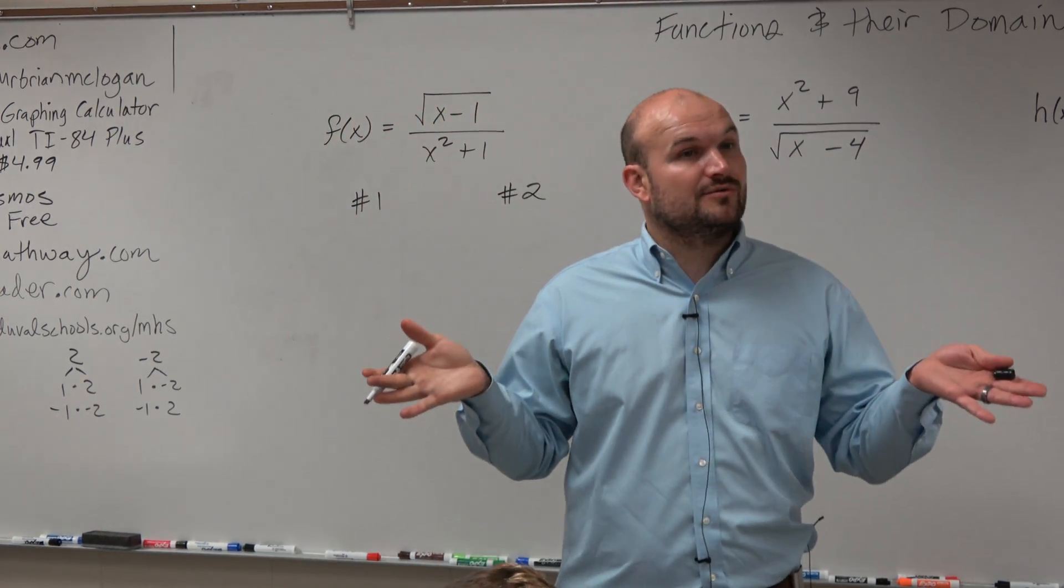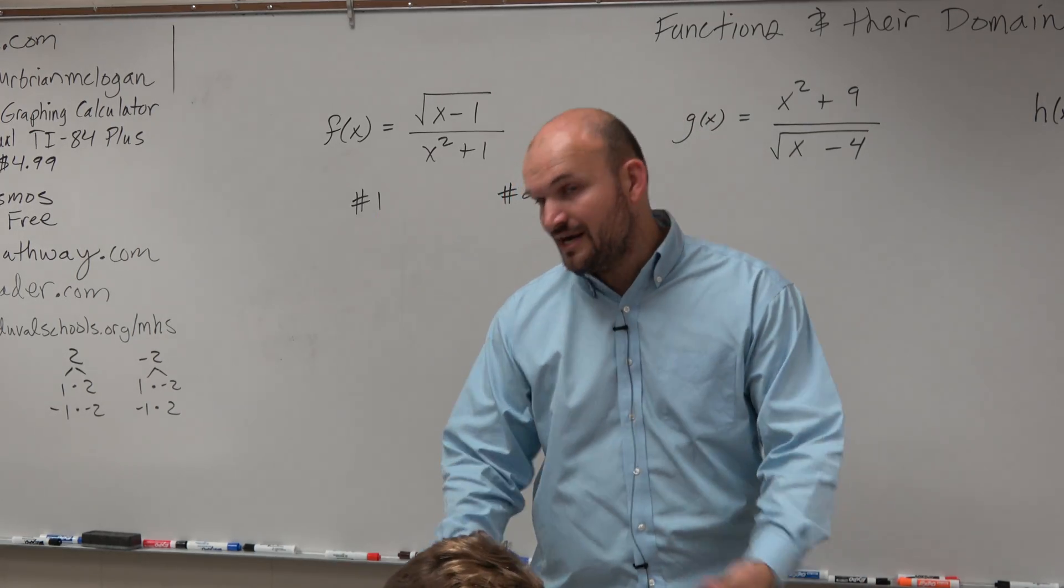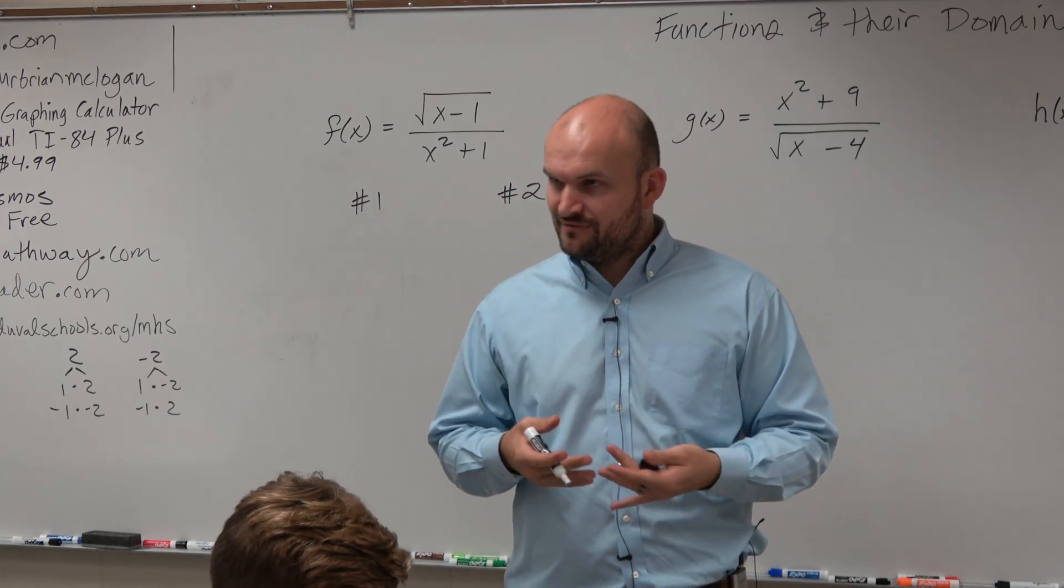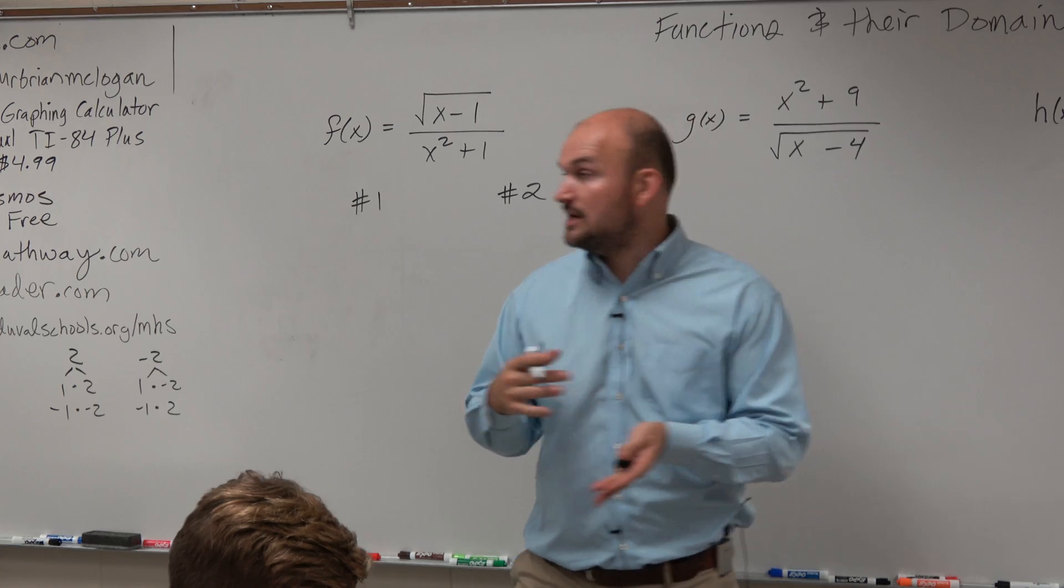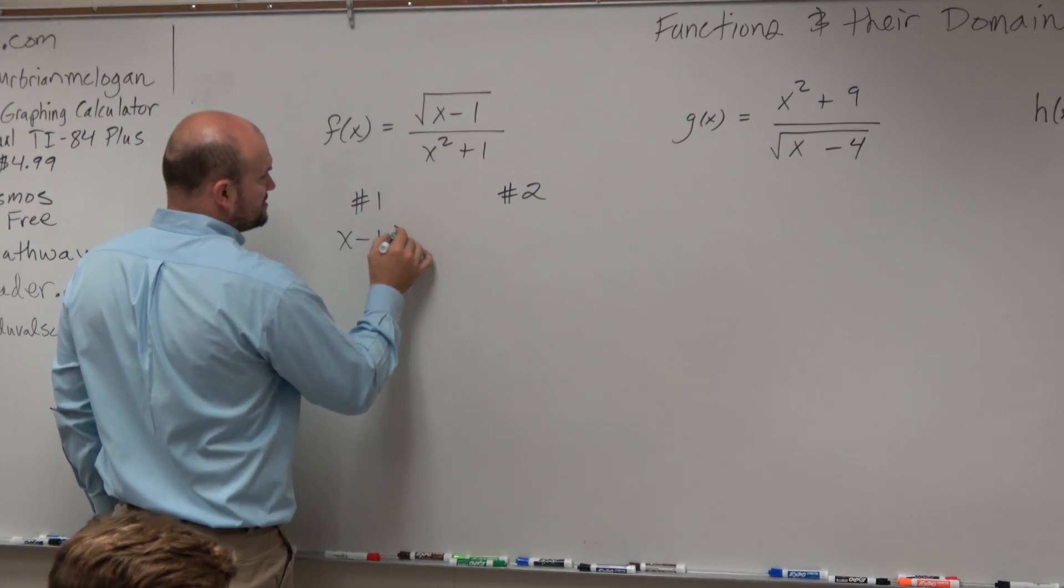Restriction number 1 says anything under the radical has to be greater than or equal to 0. I'm going to write this out kind of slow for you guys. Once you do enough of these problems, you'll be able to speed this up. So first restriction: x minus 1 has to be greater than or equal to 0.